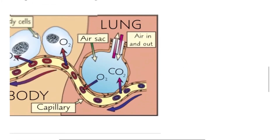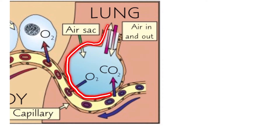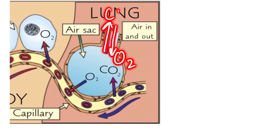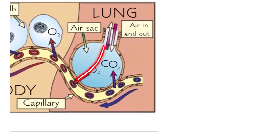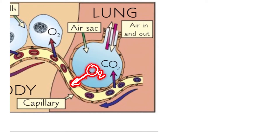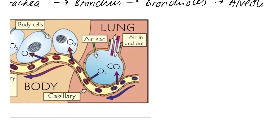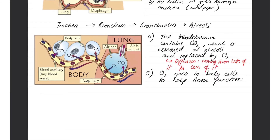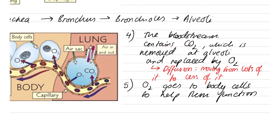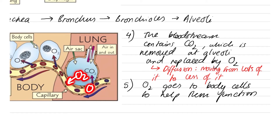The alveoli is a tiny air sac. Inside the alveoli, oxygen comes in and carbon dioxide exits. When oxygen enters the alveoli, it is directly in contact with the bloodstream. The oxygen dissolves through the membrane and passes into the bloodstream — we call this process diffusion. The bloodstream contains carbon dioxide, which is removed in the alveoli and replaced by oxygen. These are your little blood cells which carry the carbon dioxide and oxygen.